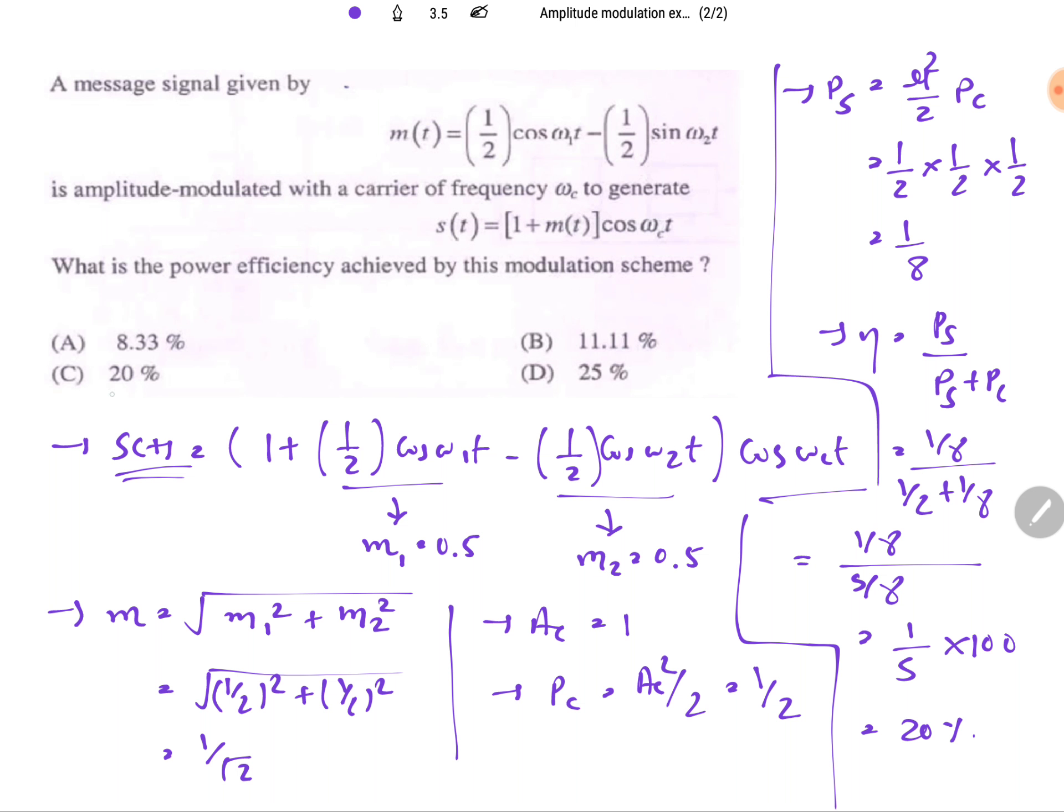So we can say efficiency of this is 20 percentage. That is how we can solve this type of problem regarding GATE examination.